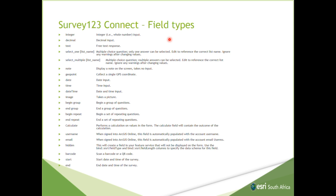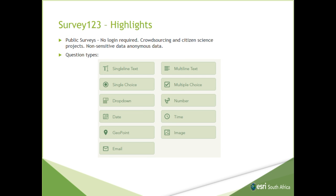I'm not going to go through all of these — it's a little bit small — but basically these are all the field types that Survey123 Connect supports. I don't think there's anything missing yet. I've been able to cover all the bases with these field types. It's got a geopoint, integer, decimals, text, select one, select multiple. I'll show you when we do the demonstration. There's nothing really that's missing.